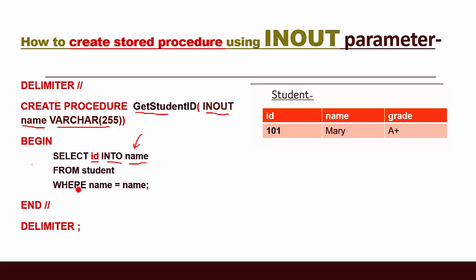The SQL code is: SELECT id INTO name FROM student WHERE name = name. So we are also inputting with the same variable — we give the student name and take out the ID into name as well.